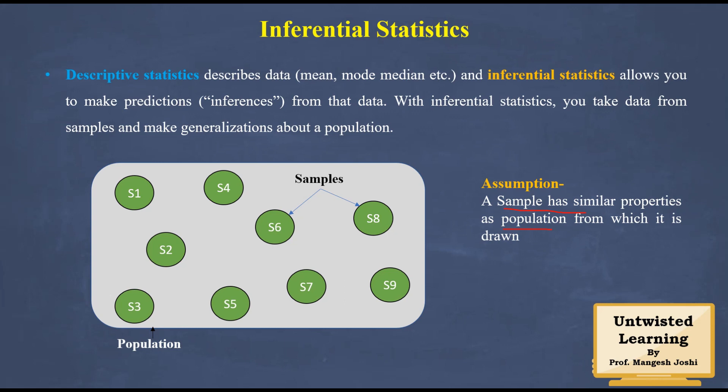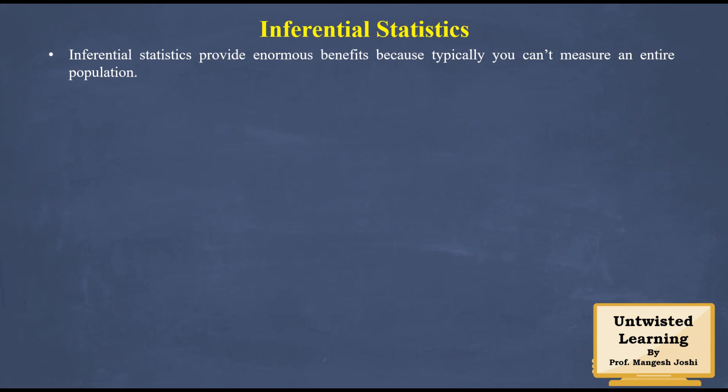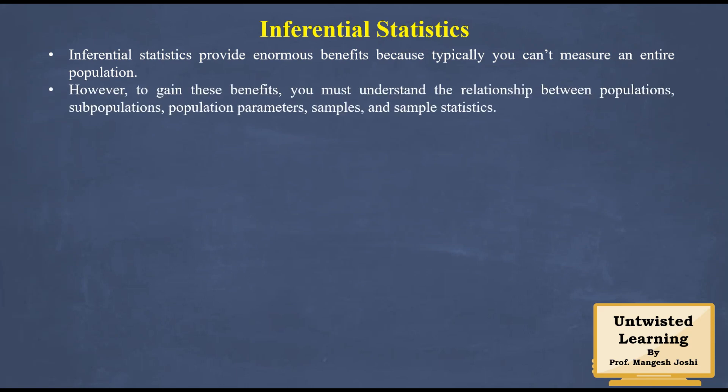This depends on the type of sampling you are using. Inferential statistics provides enormous benefit because typically you cannot measure an entire population. Suppose there are 10,000 people and you want to measure their height — that will become a very costly affair. Using samples, you can save time as well as money. However, to gain these benefits you must understand the relationship between population, subpopulation, population parameters, sample, and sample statistics.